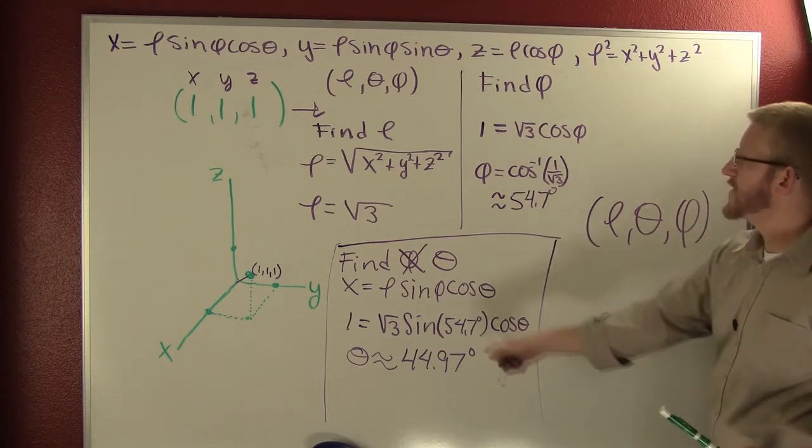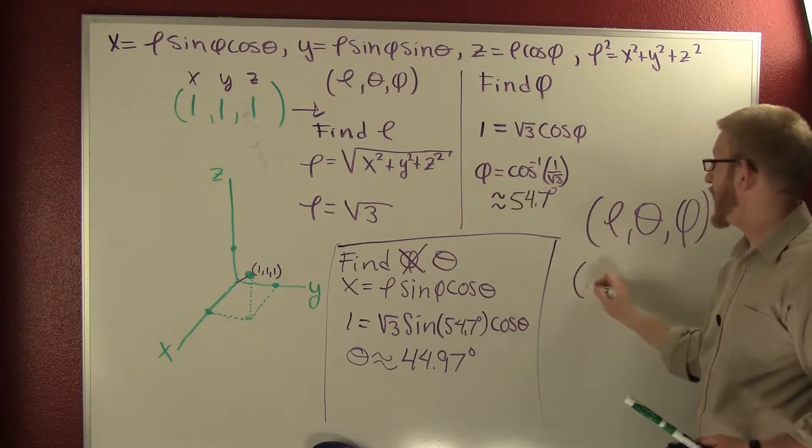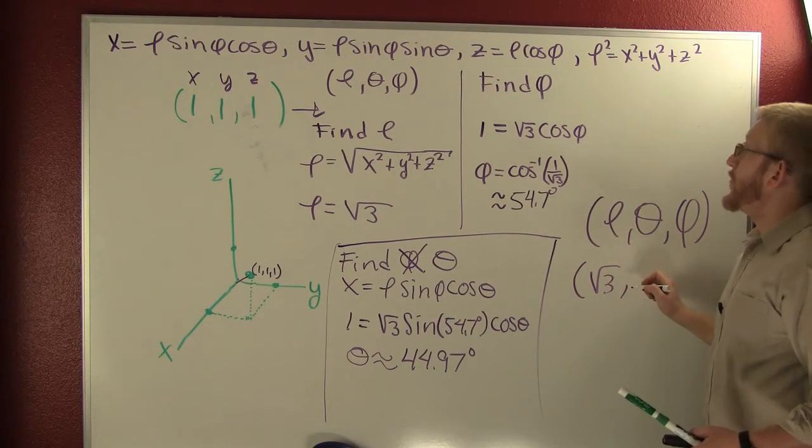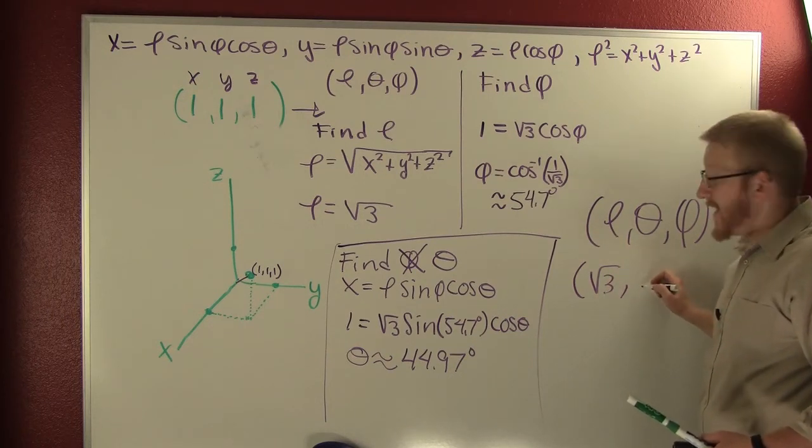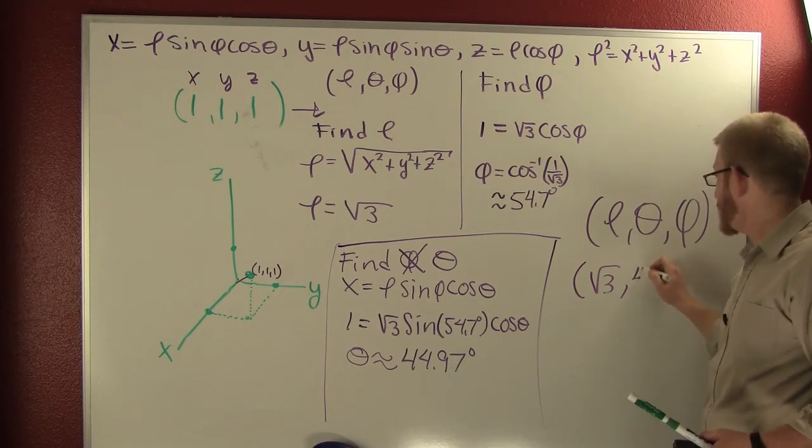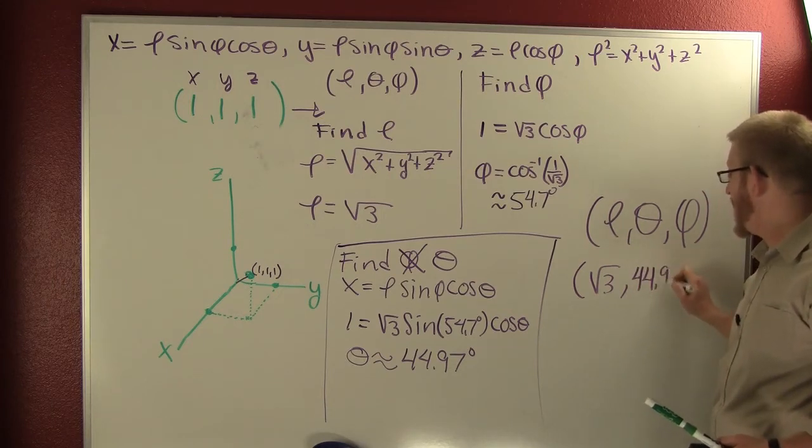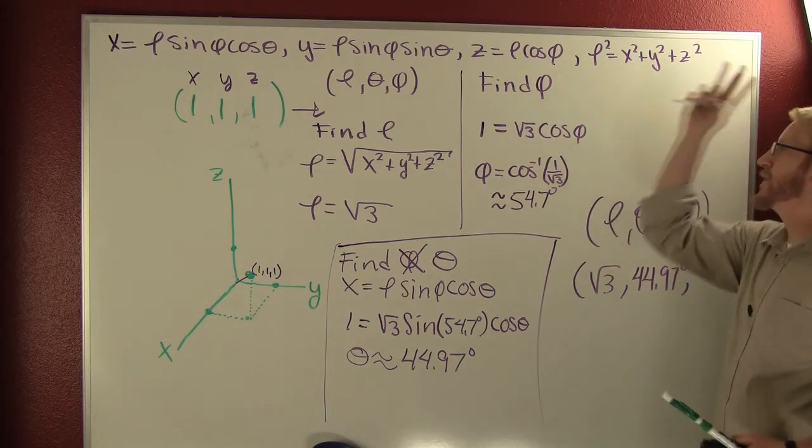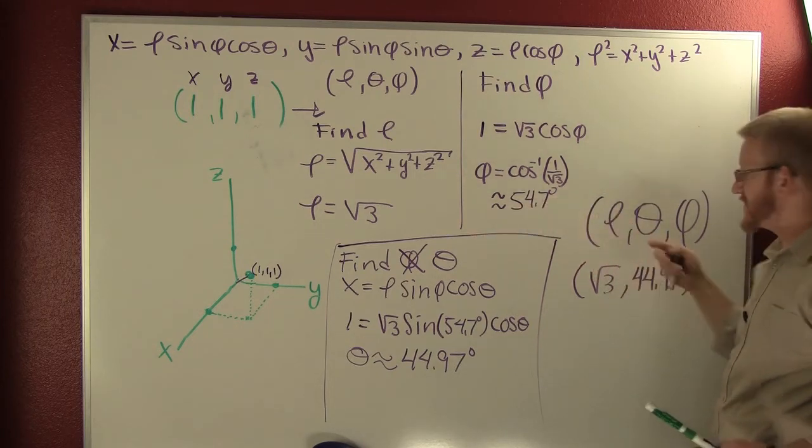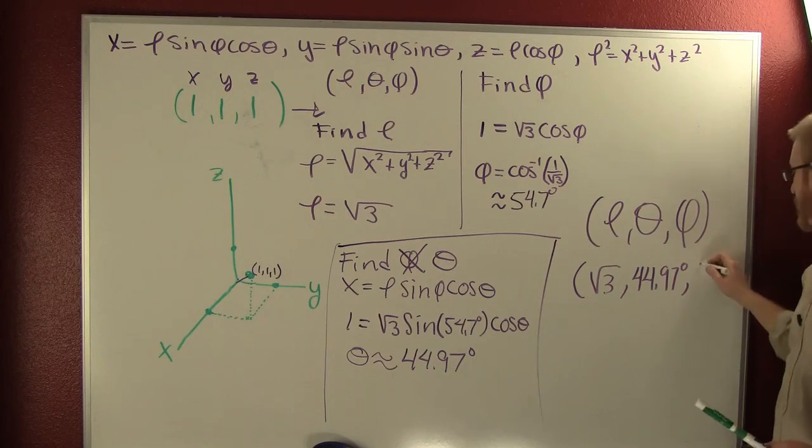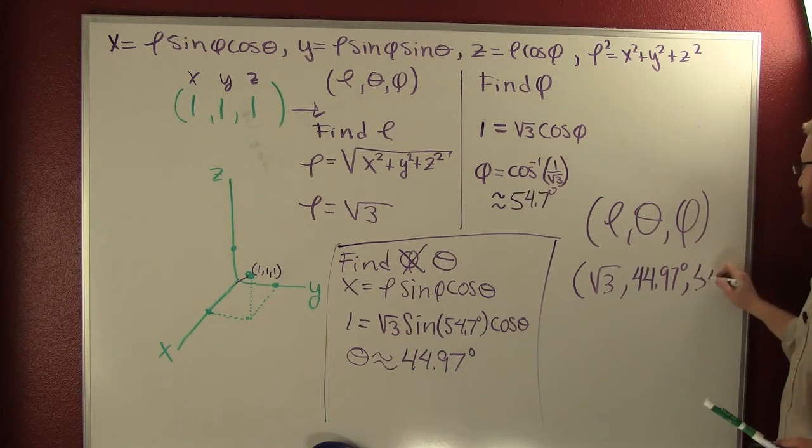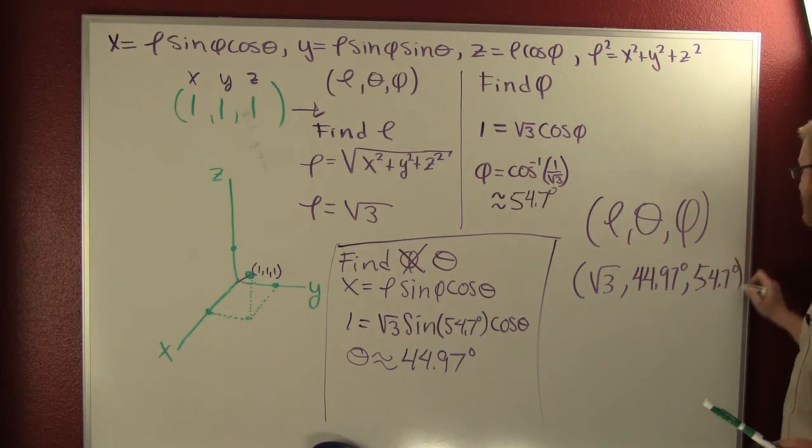So we're going to go out root three, and we're going to rotate from our positive x-axis 44.97 degrees. And then we're going to come down off our positive z-axis 54.7 degrees.